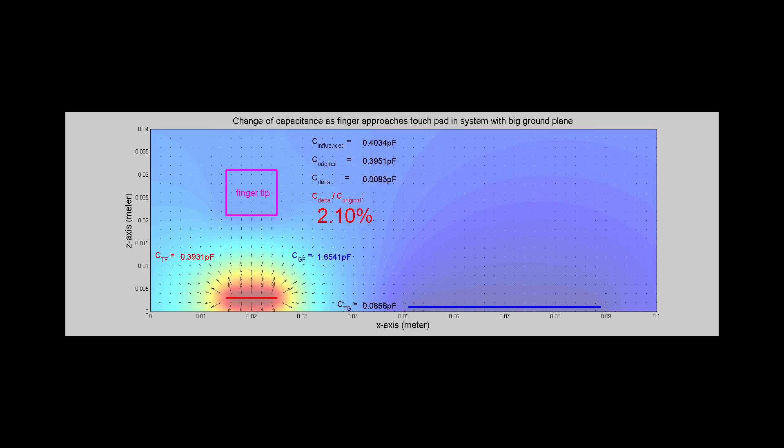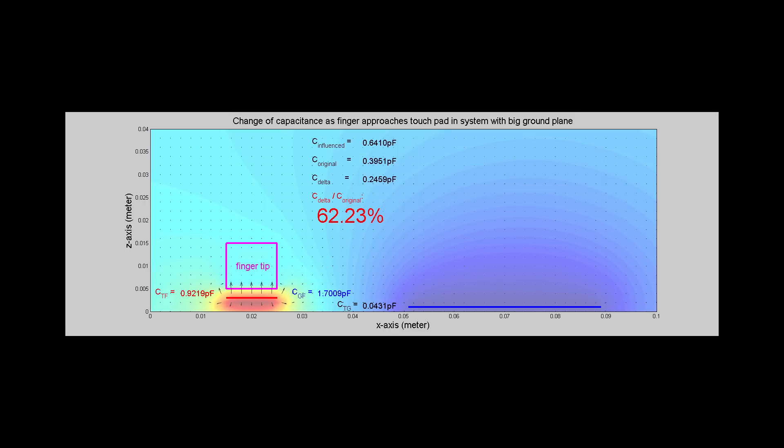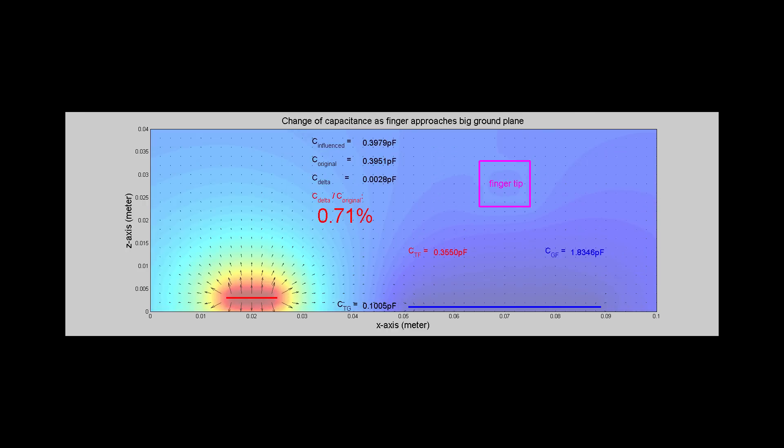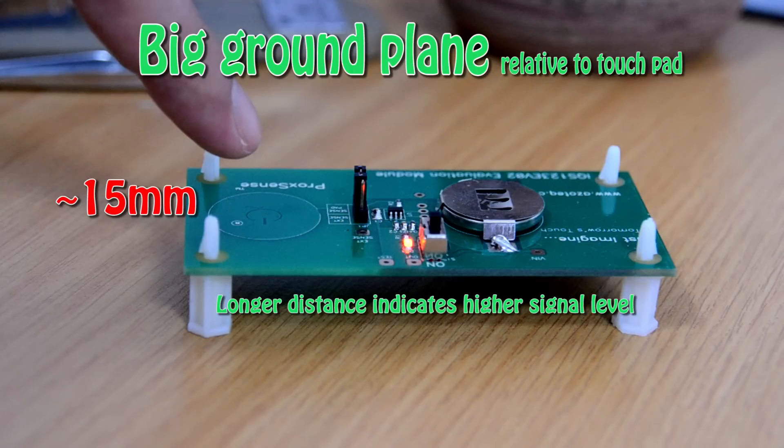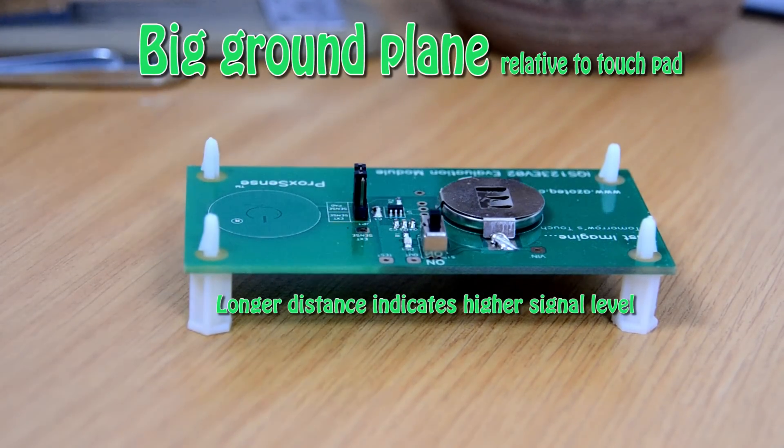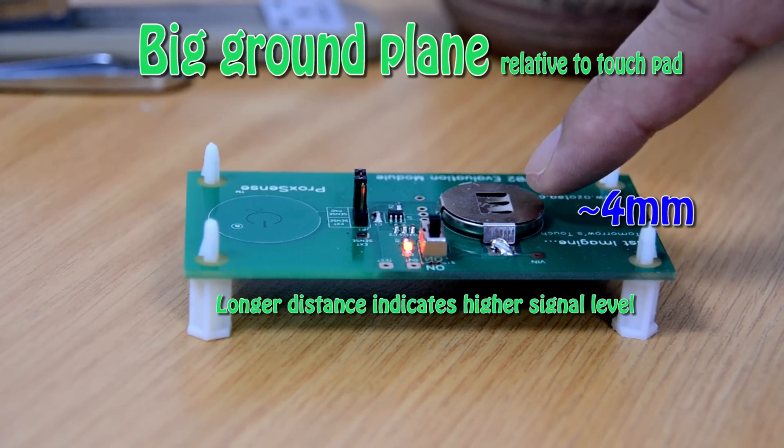In this simulation, a touch on the touchpad gives a 62% change in the capacitance compared to a 7% change for a touch on the ground plane. With such distinctive signal levels, an appropriate threshold level can be used to differentiate the touch on the touchpad from the touch on the ground plane.